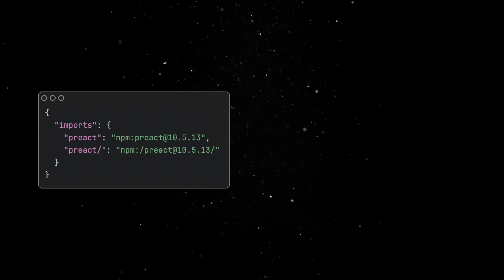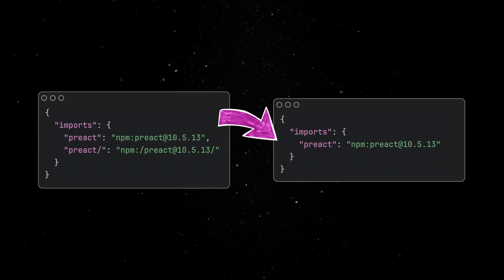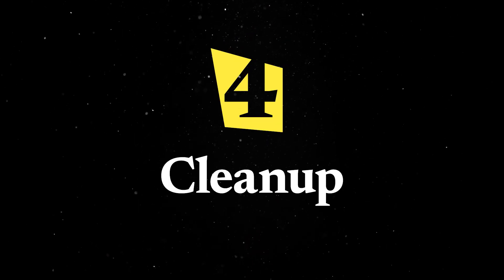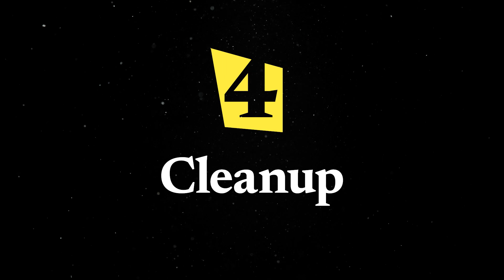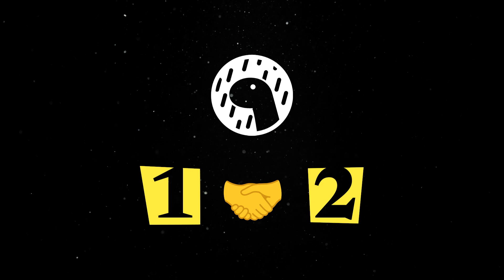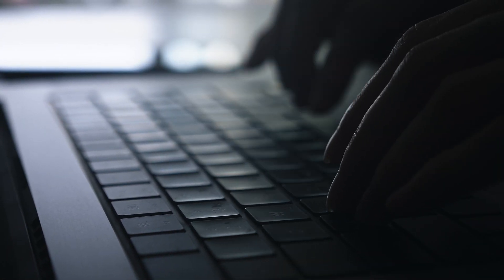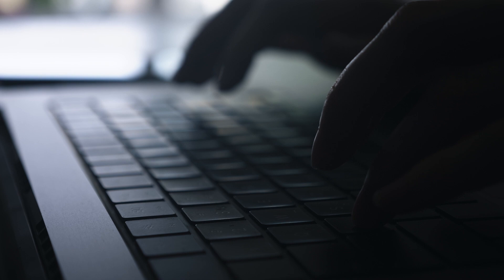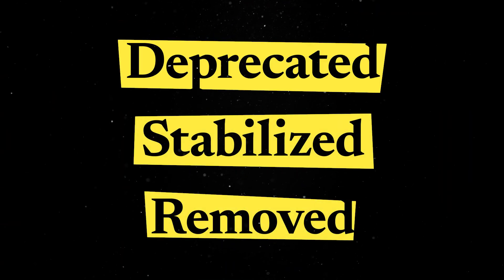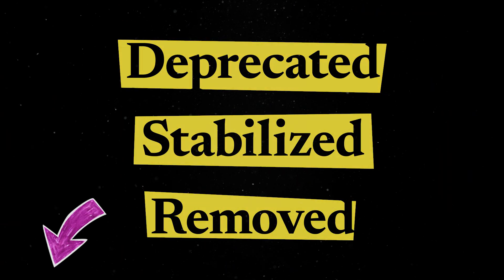We are also simplifying imports in Dino by cleaning up the syntax for subpath exports. As we gear up for Dino 2, we are committed to refining the runtime while ensuring a smooth transition from Dino 1. While most Dino 1 code will remain compatible, we are streamlining certain APIs for the platform's long-term health. There is an entire list of deprecated, stabilized, and removed features you can check in the article linked in the description.